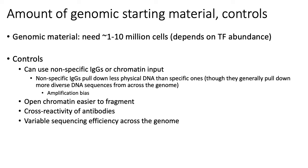Another typical consideration is what kind of control experiments you want to run. There are typically two types of controls: you might use a non-specific antibody, or you might use general chromatin input. One challenge of using non-specific antibodies is that you typically tend to pull down less DNA than with specific antibodies, so you would need to do some amplification of your target genomic sequences, which can potentially lead to amplification bias.